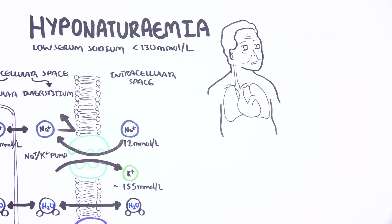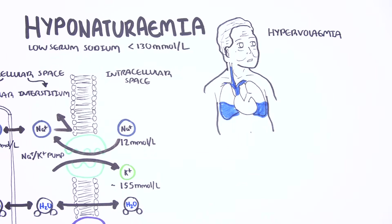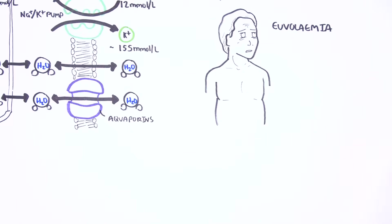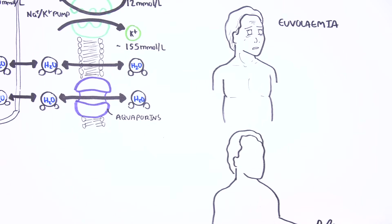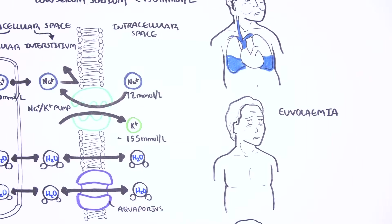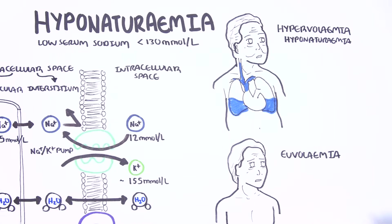Hyponatremia is easily classified according to volume status: hypervolemia, normovolemia — also known as euvolemia — and hypovolemia. Hypervolemic hyponatremia is where someone will have low serum sodium with fluid overload. They can have peripheral edema or fluid in their lungs.